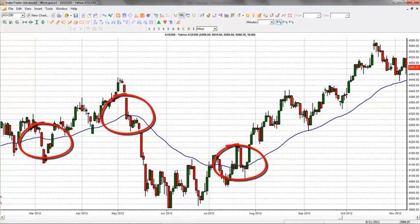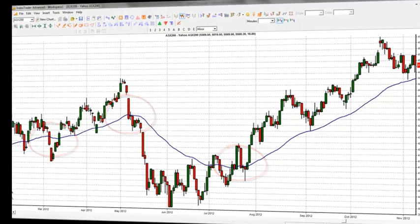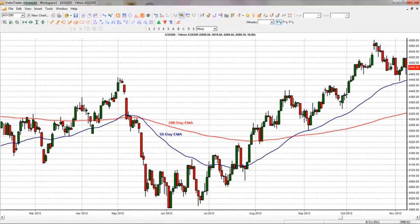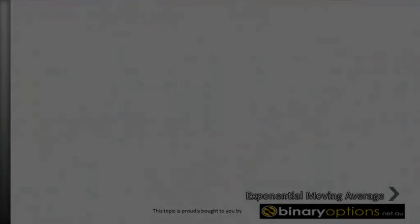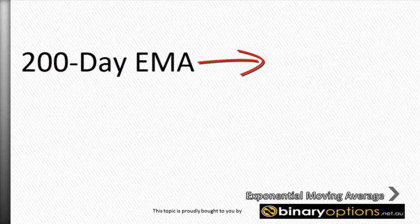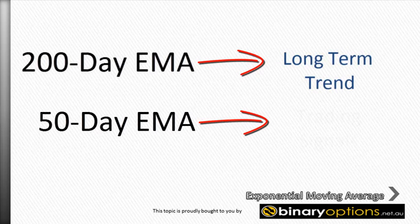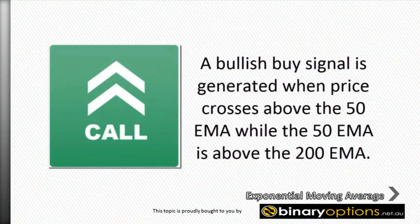When using the price crossover method for signals, a trader charts two EMAs of different period lengths, such as a 50-day EMA and a 200-day EMA. The longer-term EMA confirms the long-term trend, while the price crossover with the shorter-term EMA generates trading signals. A bullish buy signal is generated when price crosses above the 50 EMA, while the 50 EMA is above the 200 EMA.